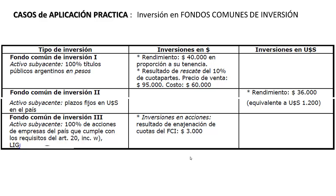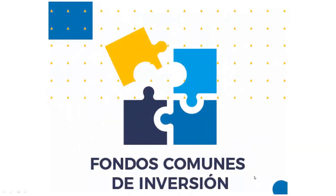La sociedad gerente o depositaria del Fondo Común de Inversión Abierto, en el marco de las resoluciones generales de AFIP 4394 y 4395, puso a disposición del cliente la información que aquí se indica. En el Fondo Común de Inversión 1, cuyo activo subyacente son 100% títulos públicos, obtuvimos rentas — intereses por 40.000 pesos — y rescatamos parte del capital invertido con una utilidad de 35.000 pesos. En el Fondo Común de Inversión 2, cuyo activo subyacente son plazos fijos en dólares en el país, obtuvimos rentas por 36.000 pesos equivalentes a 1.200 dólares. Y por último, en el Fondo Común de Inversión 3, cuyo activo subyacente son acciones que cotizan en bolsa, nuestro resultado por venta de cuotas partes fue de 3.000 pesos.